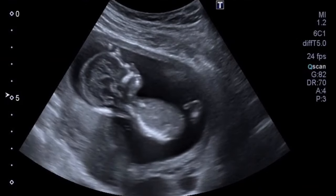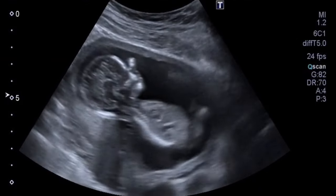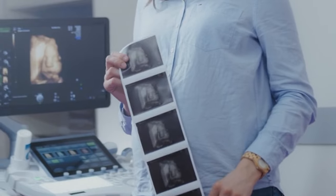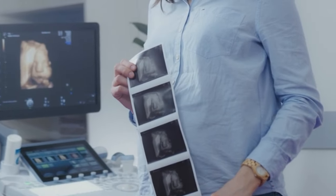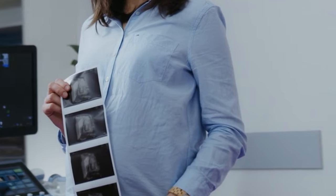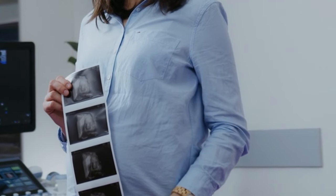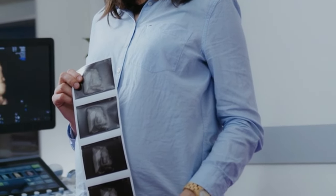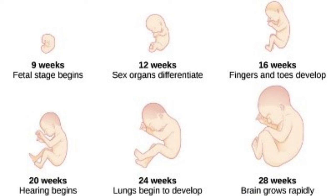The baby's lungs are not very mature by 24 weeks, meaning that if born prematurely at this period, the baby will require lots of medical support to survive. Each additional week in the womb allows the lungs to develop better and become more mature, with an increased chance of survival if born prematurely, until 37 to 42 weeks when the baby is better off delivered than remaining in the womb.